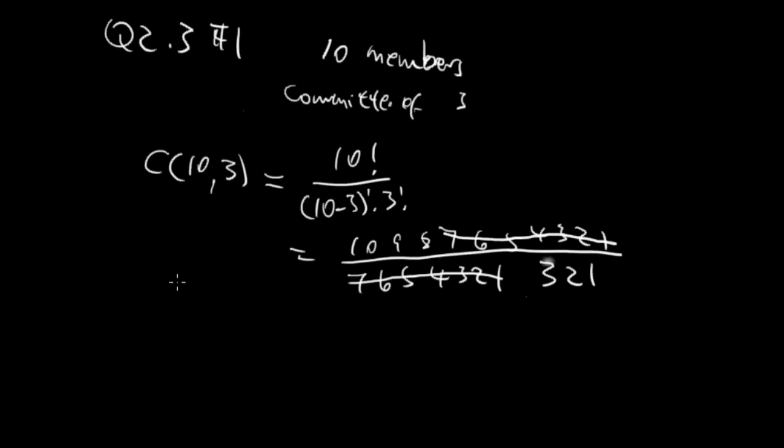So here's the trick. If we have 10 choose 3, you can simply, this 3 tells you that you go 3 times before you stop on the top. So here you can go 10, 9, 8, so that's 3 times.